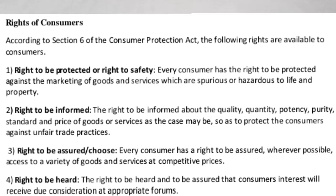According to Section 6 of the Consumer Protection Act, the following rights are available to consumers. Number one: the right to be protected, or right to safety — every consumer has the right to be protected against the marketing of goods and services which are spurious or hazardous to life and property. Number two: the right to be informed about the quality, quantity, potency, purity, standard, and price of goods and services, so as to protect consumers against unfair trade practices.